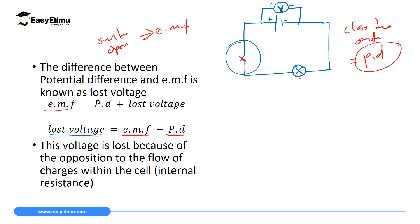To calculate lost voltage, you take the voltage before you switch on the switch, then subtract the potential difference after you switch on the switch. Therefore: EMF equals PD plus lost voltage. Rearranging, lost voltage equals EMF minus potential difference. This voltage is lost because of the opposition to the flow of charge within the cell — that is what we call internal resistance — and also due to opposition of current flowing in the wire.